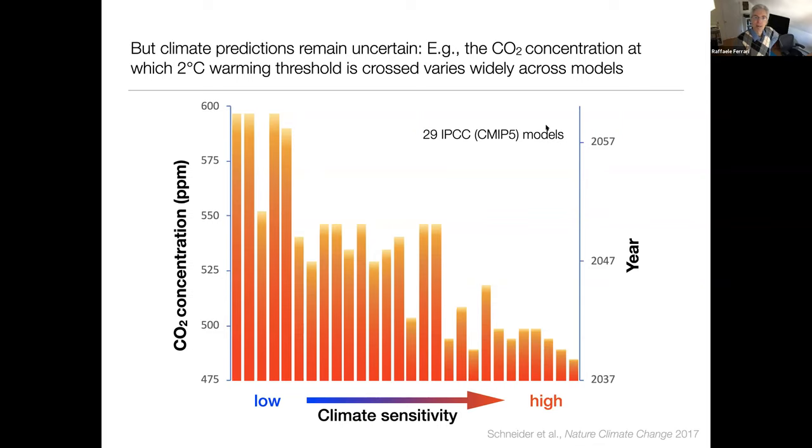In particular here I'm showing at what carbon dioxide concentrations in the atmosphere we expect climate models predict that we will have a temperature increase of 2 degrees C compared to pre-industrial values. I choose 2 degrees C because that's the value that has been agreed on in the 2016 Paris Agreement as a threshold that we should try not to exceed. If I take 29 of these IPCC models, some models predict that will happen at around 600 parts per million concentration in CO2. Other models predict that we cross the thresholds already at 400 ppm. For reference we are already at 415 ppm today.